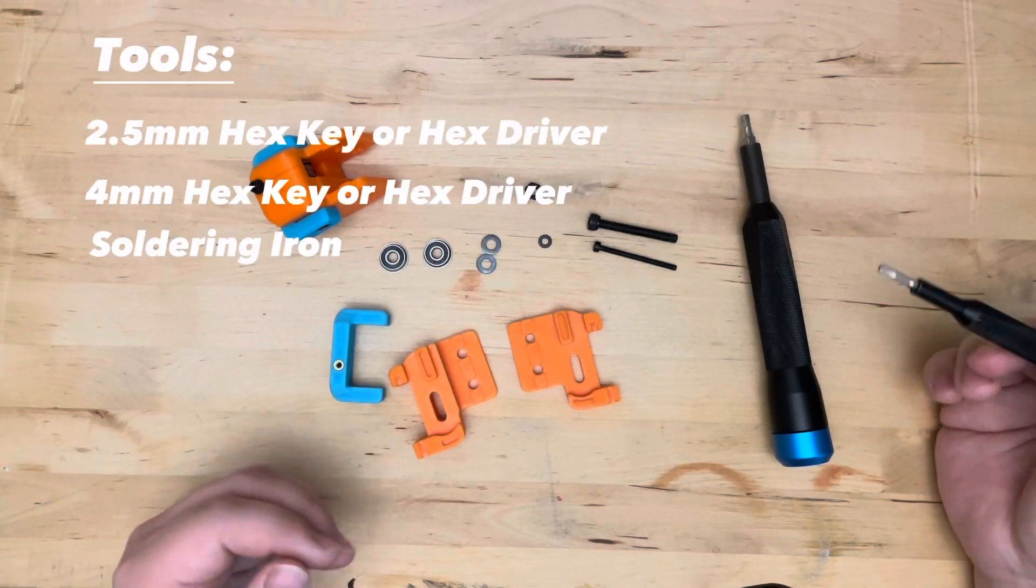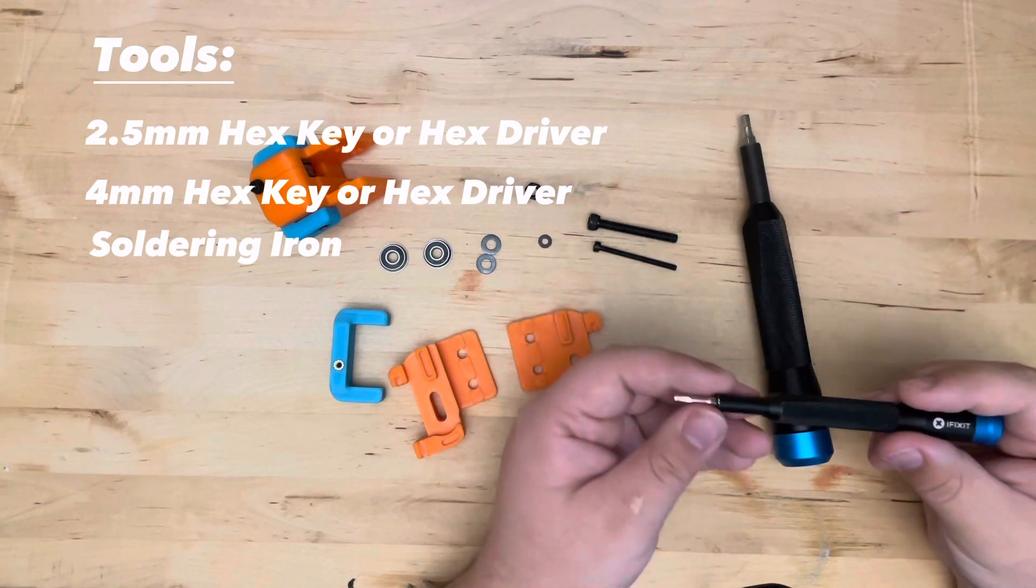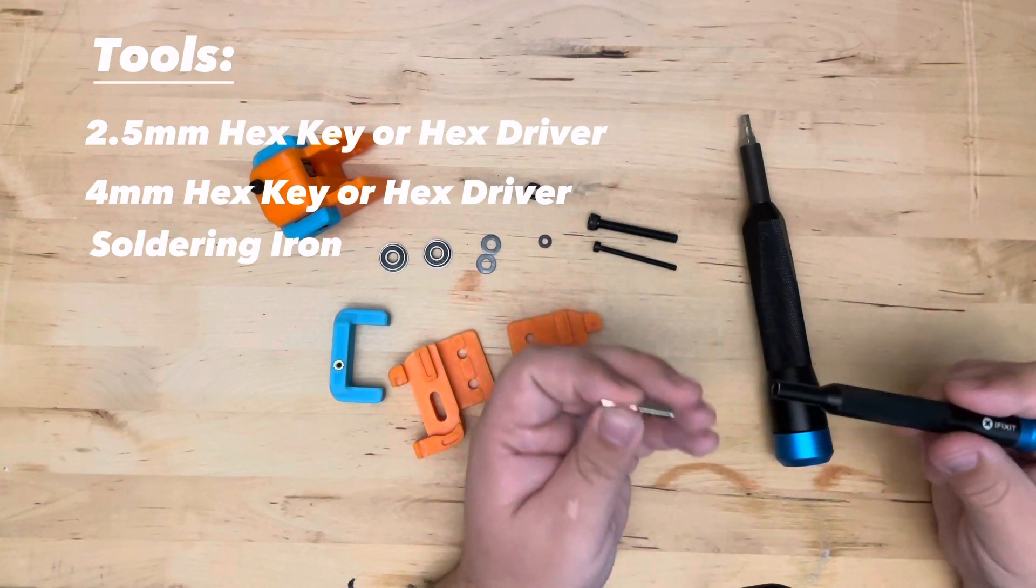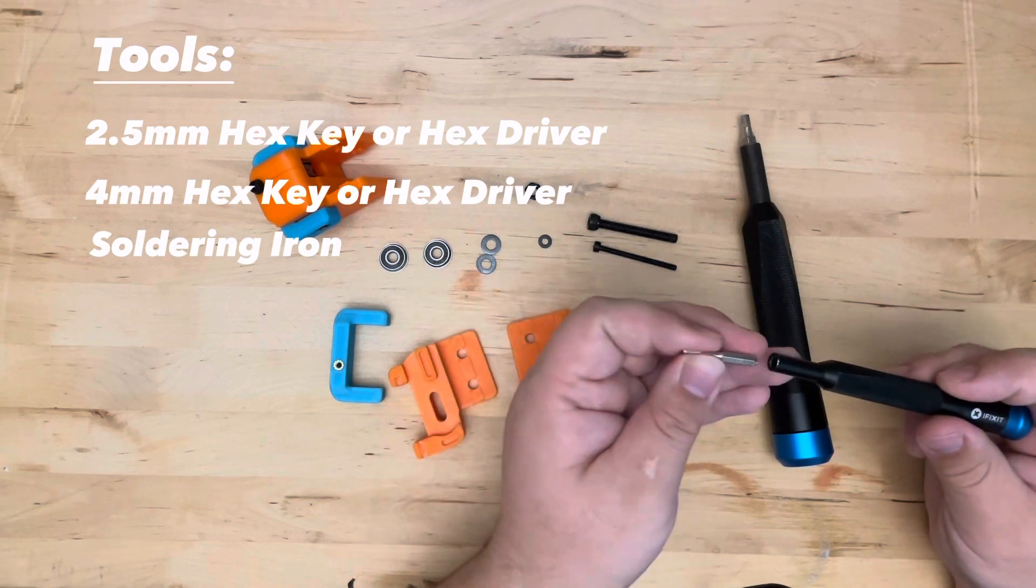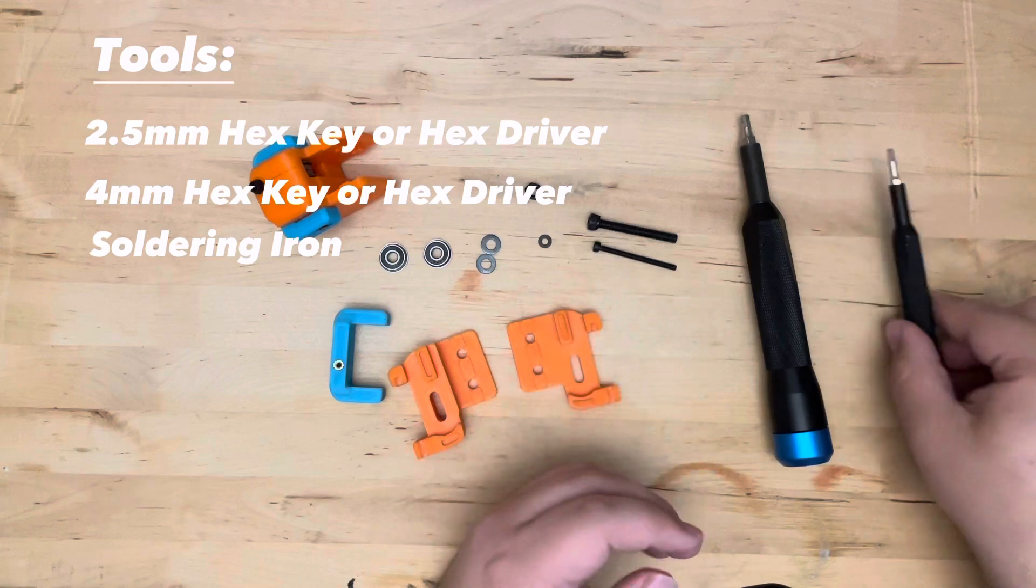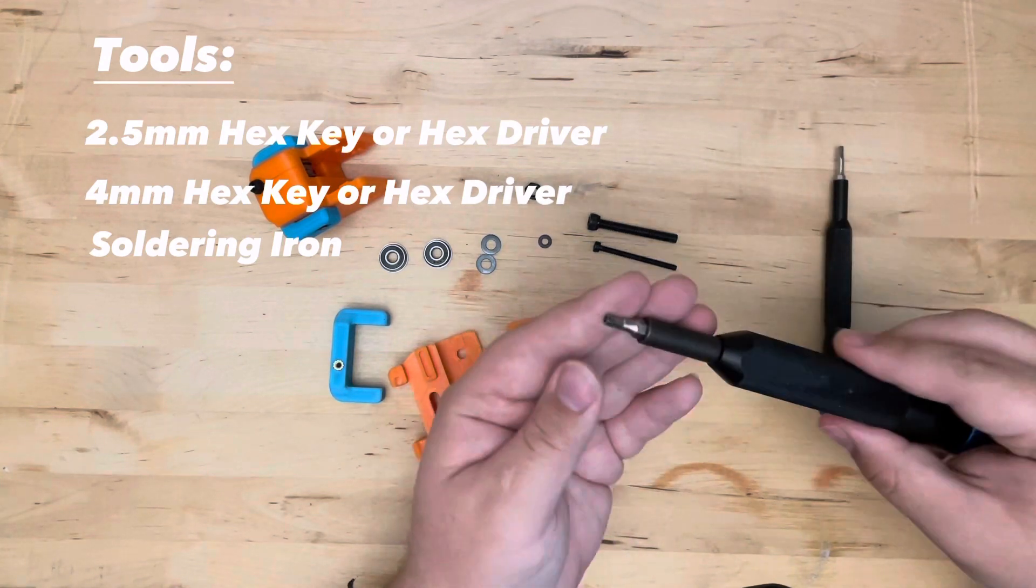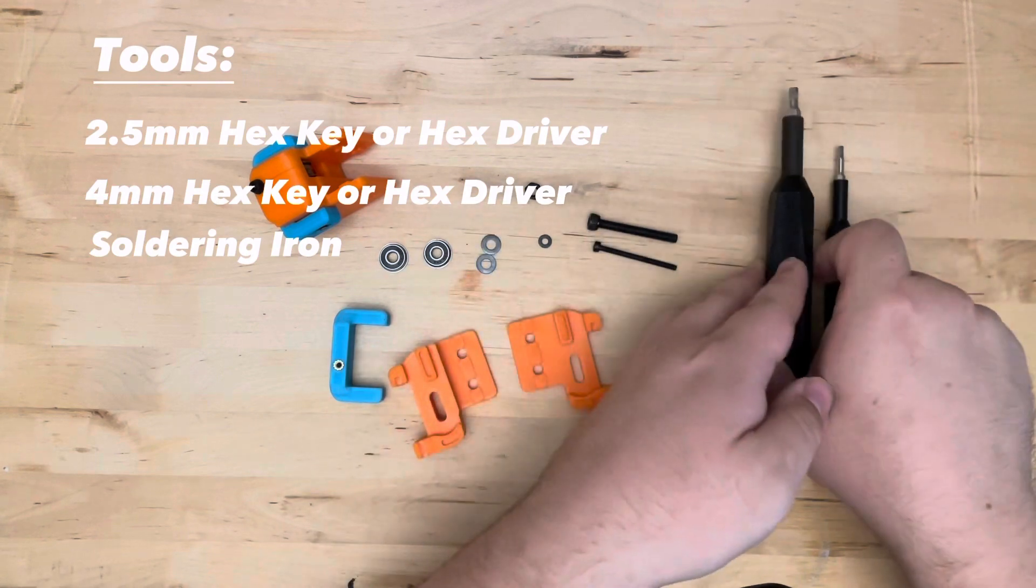For tools, you are going to need two screwdrivers, or one screwdriver and two bits. This is a 2.5mm hex head screwdriver, and you're going to need a 4mm screwdriver or bit.